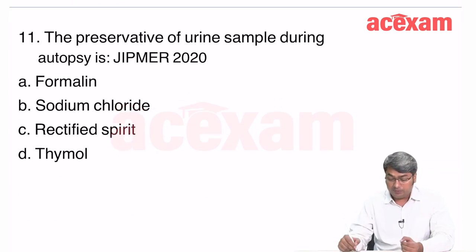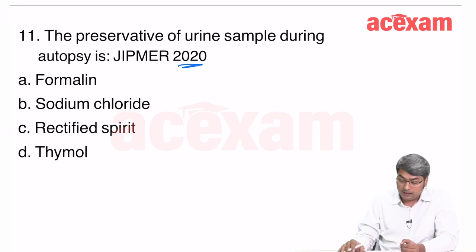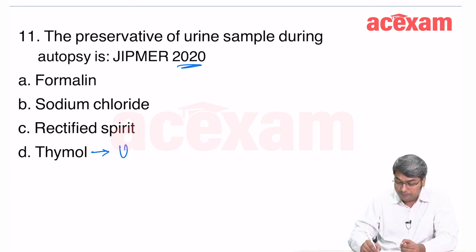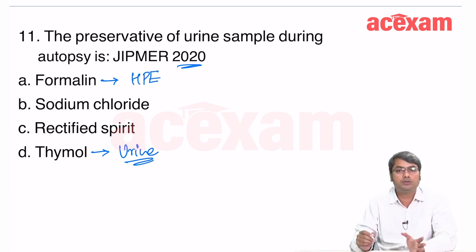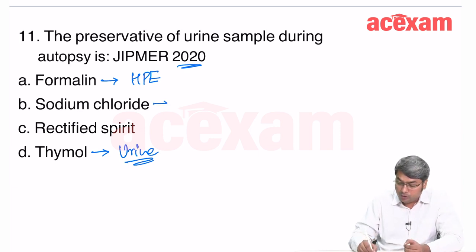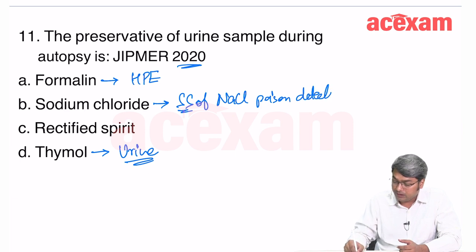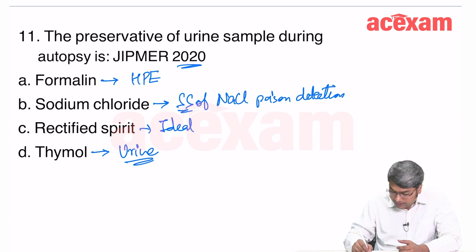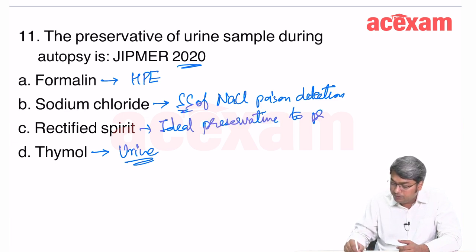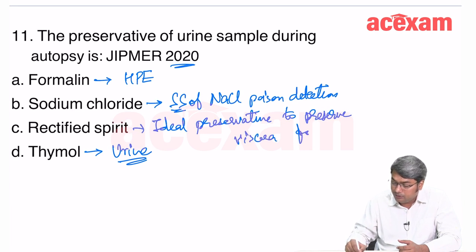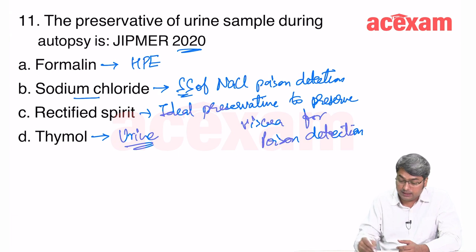The preservative for urine sample during autopsy, asked in JIPMER 2020, is thymol. Formalin is used for histopathological examination, never for poison analysis. Saturated NaCl solution is the most commonly used preservative for viscera sent for poison detection. Rectified spirit is the ideal preservative for viscera for poison detection but is not routinely used. For blood, sodium fluoride and EDTA are used.